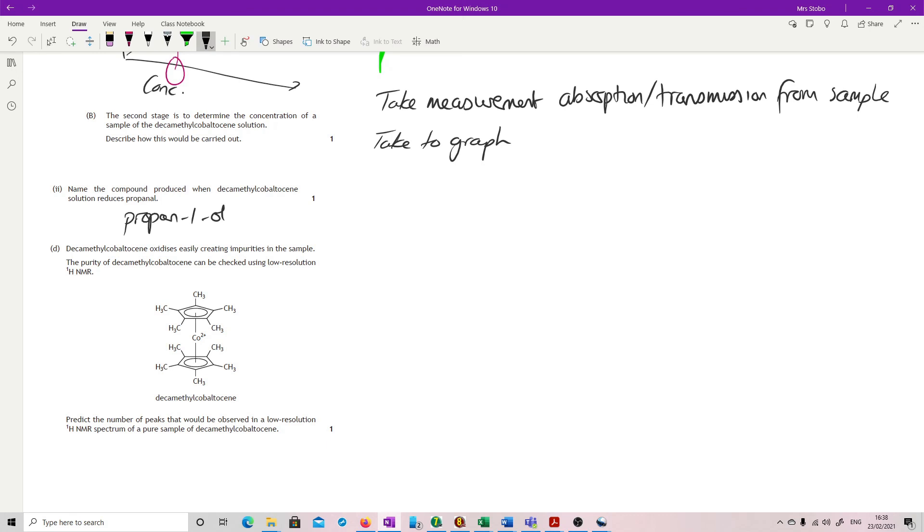And it's a bit of a sneaky question, because the answer is one. Because every single one of these hydrogens that you can see around here that is attached to that benzene ring has exactly the same environment as every other single one of them. So, one. And that is the end of this particular paper.